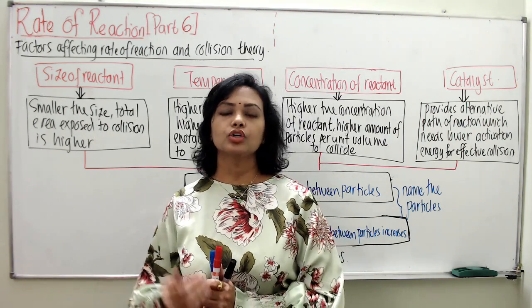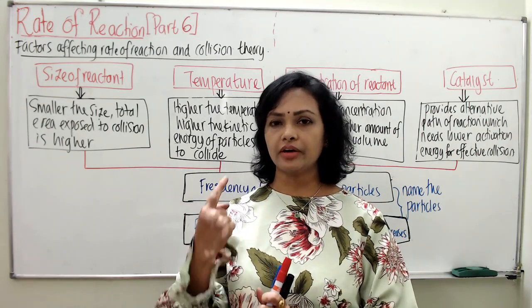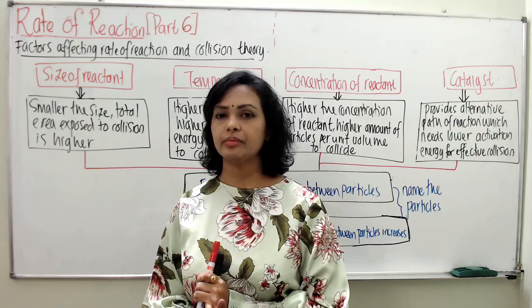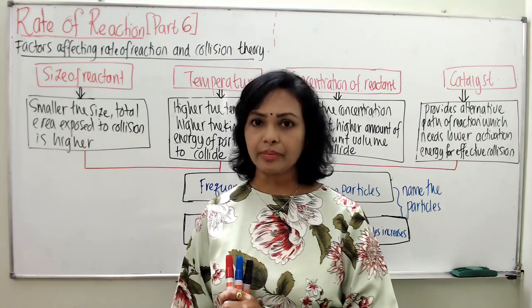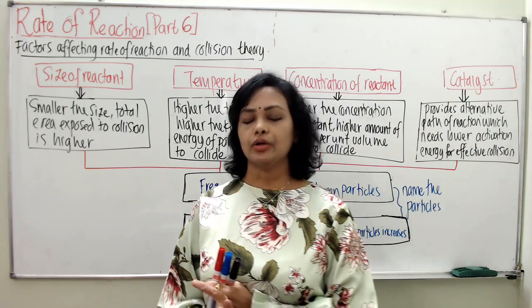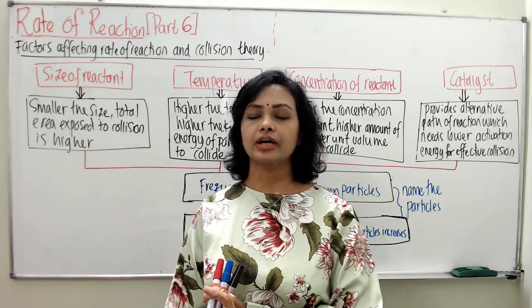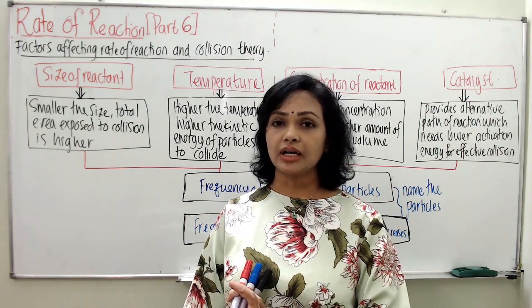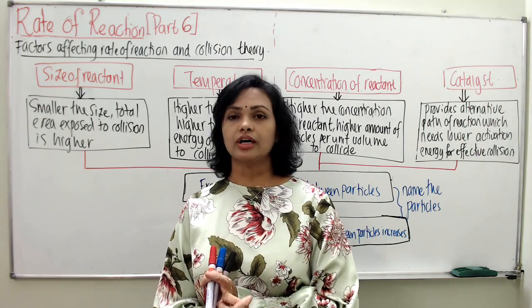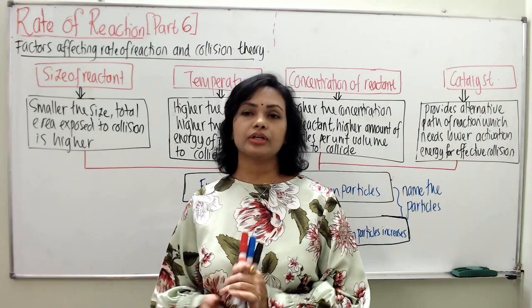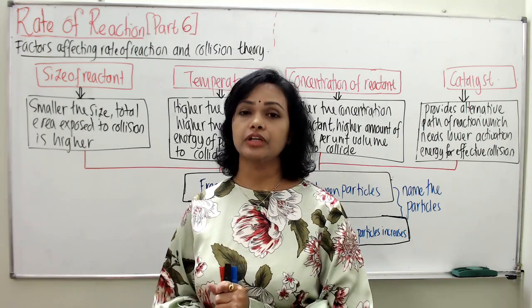For effective collision to occur, two conditions are needed: the particles must have enough activation energy (at least the minimum activation energy), and the particles must collide in the correct orientation. These are the two important rules for effective collision.